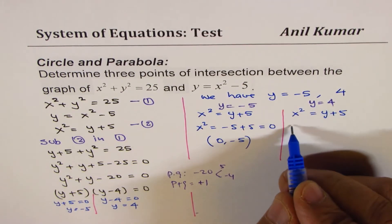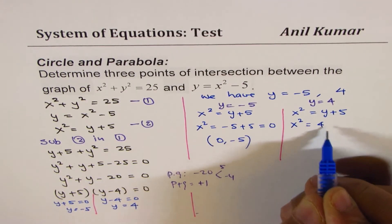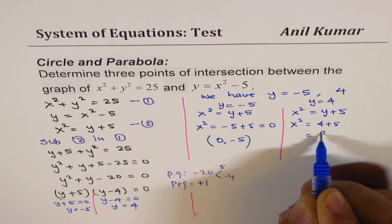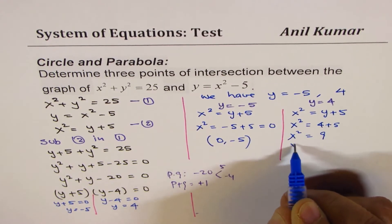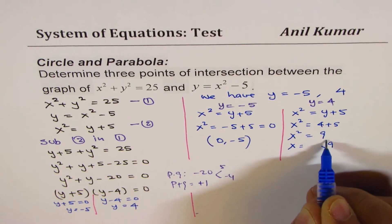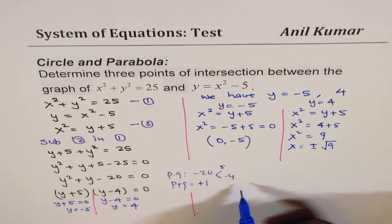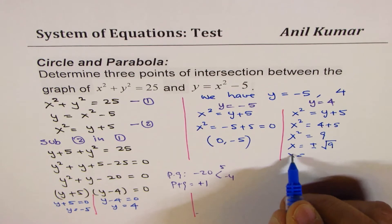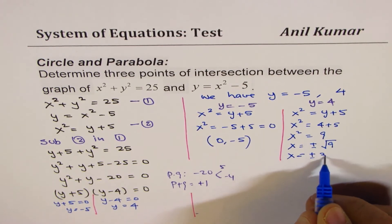If I substitute 4, I get x squared equals 4 plus 5, which is 9. So x squared is 9, x should be square root of 9. Whenever you do square root, you have to do plus and minus, and that gives us two points: plus and minus 3.